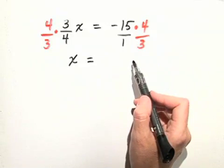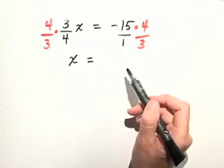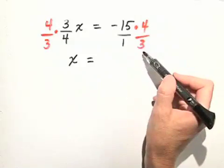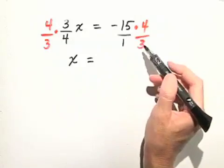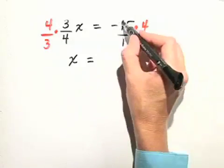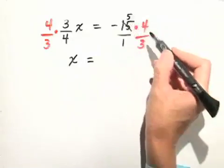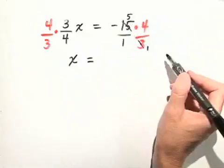Now in this case we can do some canceling by dividing out like factors. Both 15 and 3 are divisible by 3. So 15 divided by 3 is 5, and 3 divided by 3 is 1.